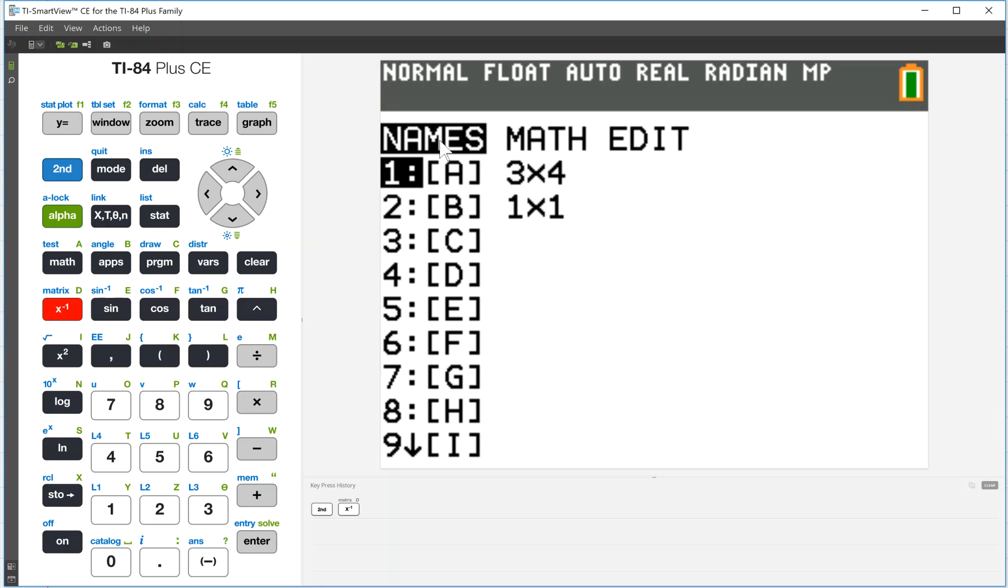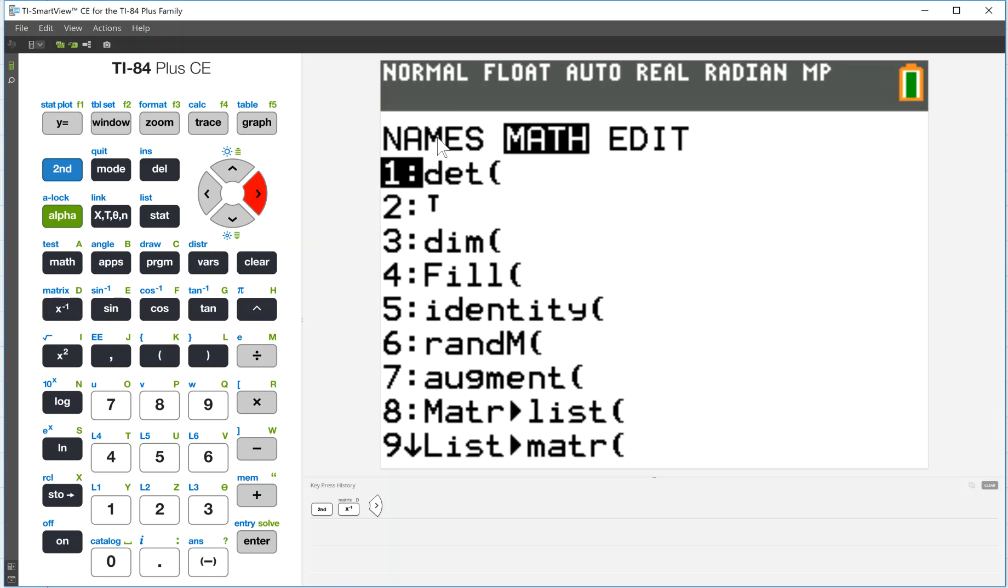It looks like we have one that's a 3 by 4 and we have one that's a 1 by 1 already, so we'll create another one. We'll call it C because that doesn't have anything there yet. The names column, that's just literally a list of all the matrices. The next column over, that's the math column, that gives us all of the functions or things we can do with our matrices.